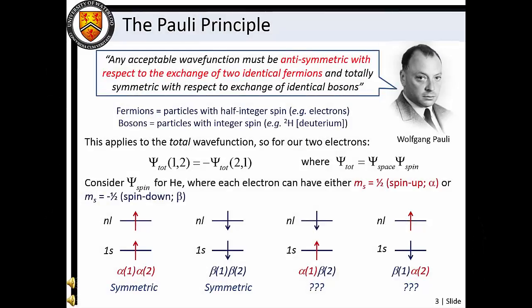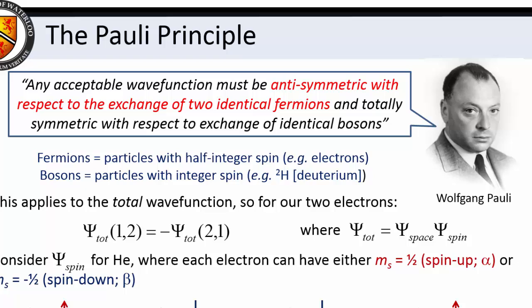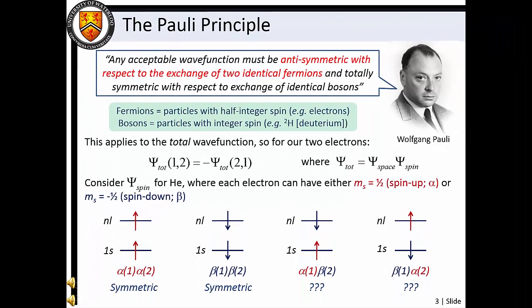The Pauli principle can also be stated as: any acceptable wave function must be anti-symmetric with respect to exchange of two identical fermions, and totally symmetric with respect to exchange of identical bosons. Here we must remember that fermions are particles with half-integer spin quantum numbers, and bosons are particles with integer spin quantum numbers. This applies to the total wave function, so by exchanging two electrons we find that ψ_total(1,2) equals negative ψ_total(2,1).